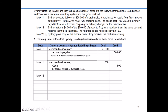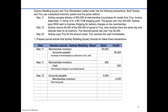On May the 12th, Sydney returned $4,000 of the $50,000 originally purchased from Troy. Troy received them the same day and restored them to inventory. In a perpetual inventory system, we need to reflect the lower inventory and reduced obligation. We debit accounts payable $4,000 to lower the liability, and credit merchandise inventory $4,000 because we no longer have those items on our shelves available for sale.